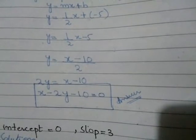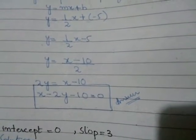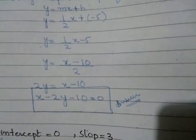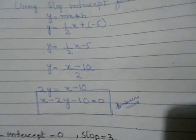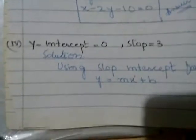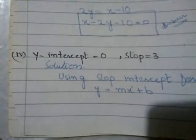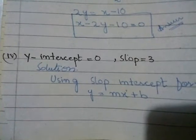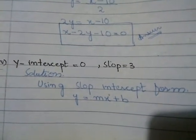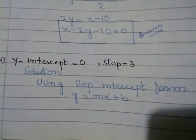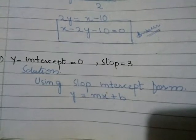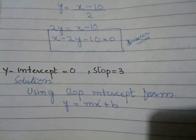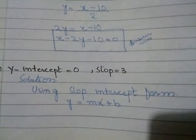x − 2y − 10 = 0 is our required equation of a straight line. Question number 4: y-intercept is equal to 0 and slope is equal to 3. Solution: using slope-intercept form, y = Mx + B.